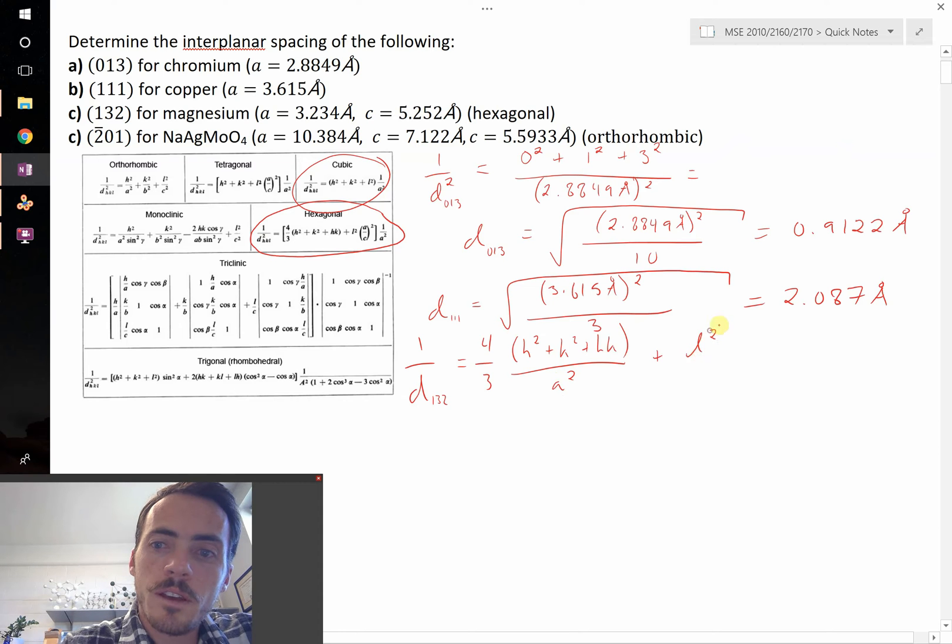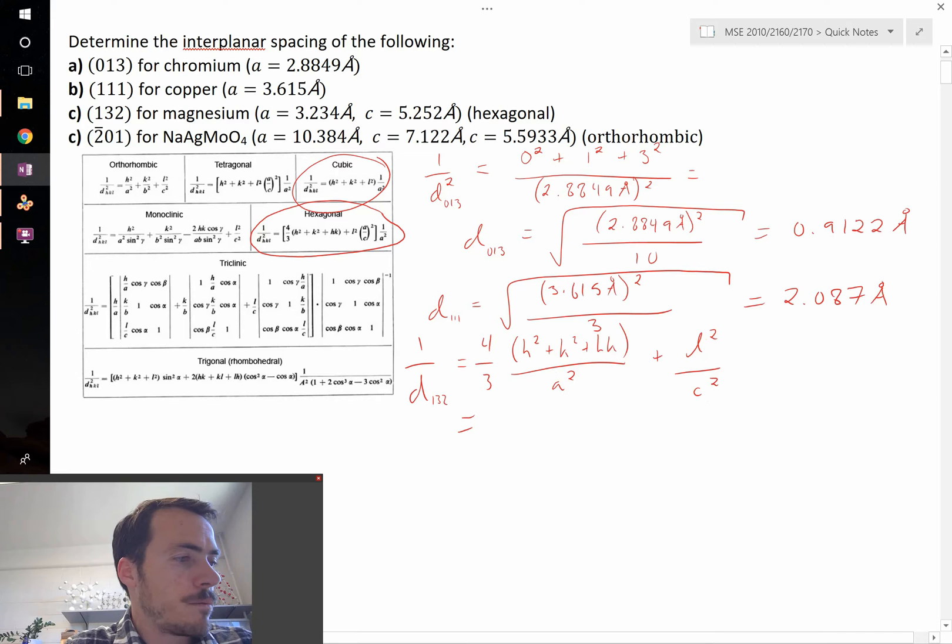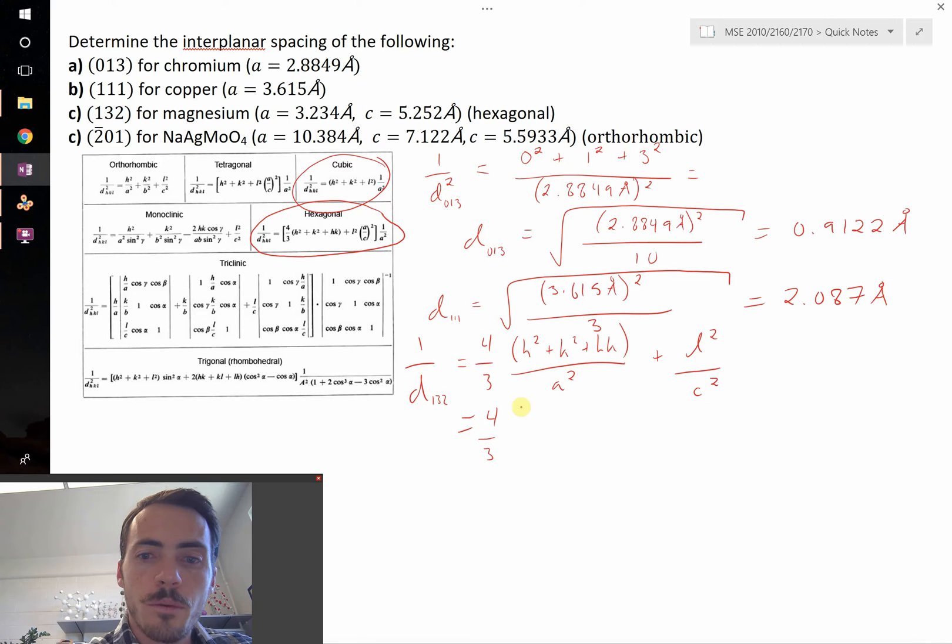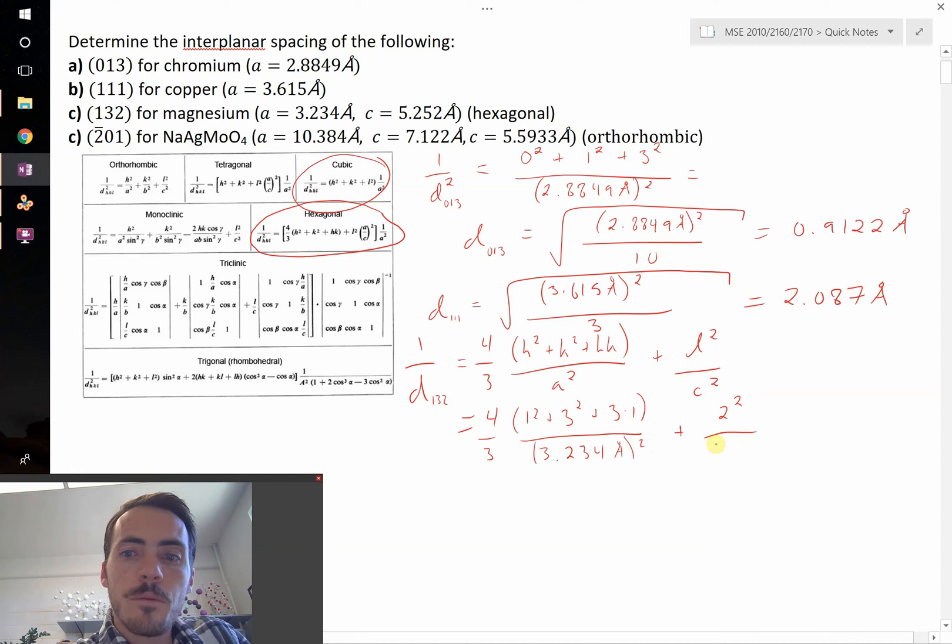So let's write what that would be equal to. 4/3 multiplied by, in this case, 1 squared plus 3 squared plus 3 times 1, all that divided by the a lattice parameter, which is 3.234 angstroms squared, plus our l. l in this case is 2, so it's 2 squared over c squared, which is 5.252 angstroms, and then we have to square that.